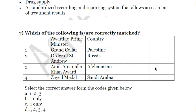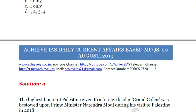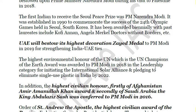The seventh question: which of the following awards to the Prime Minister are correctly matched with their countries? First, Grand Collar — Palestine. Second, Order of St. Andrew — Russia. Third, Amir Amanullah Khan Award — Afghanistan. Fourth, Zayed Medal — Saudi Arabia. The first three are correct: Grand Collar is the highest civilian award of Palestine, given to our PM in 2018; Order of St. Andrew is the highest civilian award of Russia; and Amir Amanullah Khan Award is Afghanistan's highest award. However, the Zayed Medal is the highest civilian award of the UAE, not Saudi Arabia. The answer is A — one, two, and three.